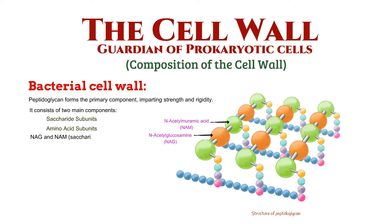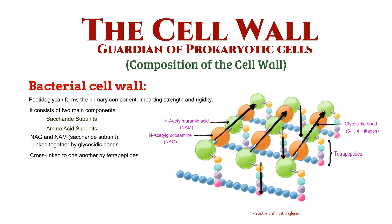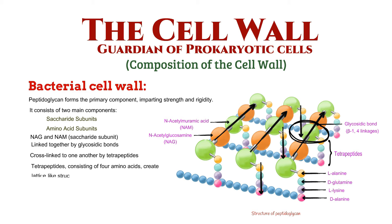NAG and NAM, forming the backbone of the cell wall, are linked together by glycosidic bonds and are cross-linked to one another by tetrapeptides extending off the NAM units. These tetrapeptides, consisting of four amino acids, create a lattice-like structure by forming connections between adjacent polysaccharide chains.